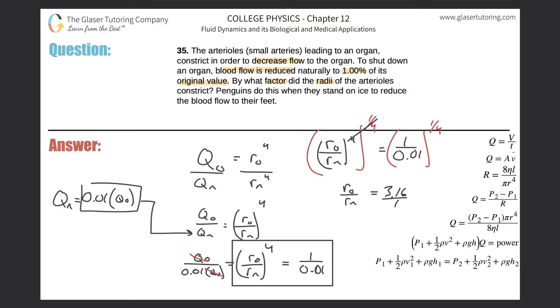Okay, so this is 3.16 to one. If you want, you can write that over one, that's fine. So what does this tell us, right? This tells us that the radius of the original artery was 3.16 times larger than the radius of the new artery. So it says by what factor did the radii have to constrict.